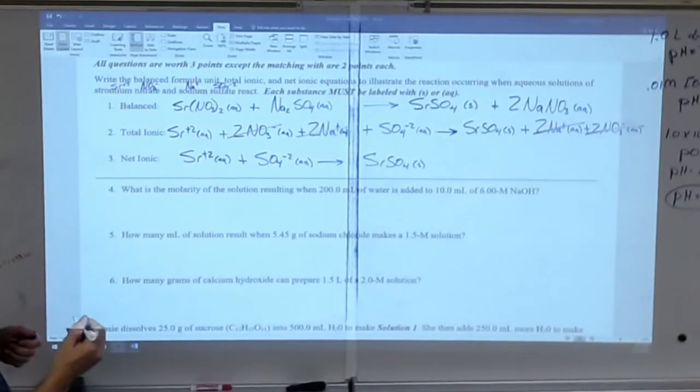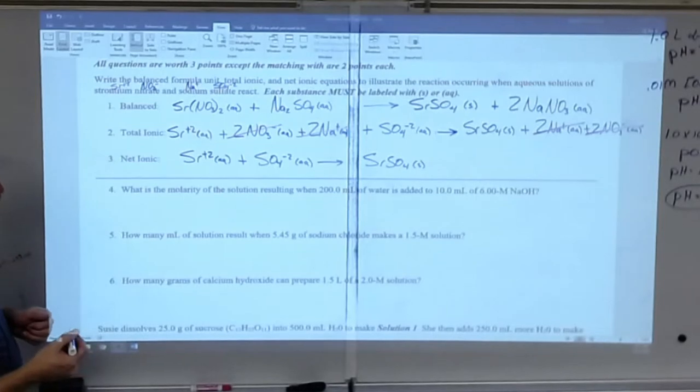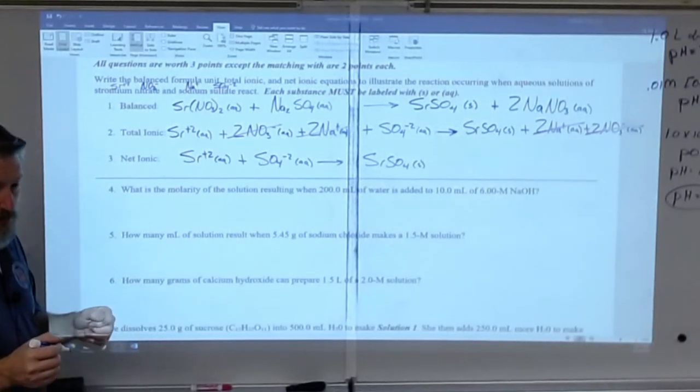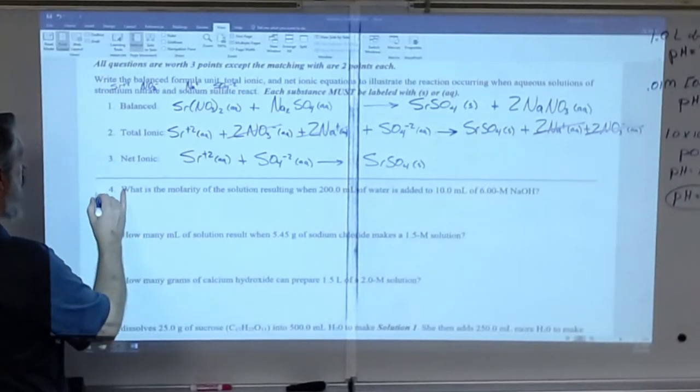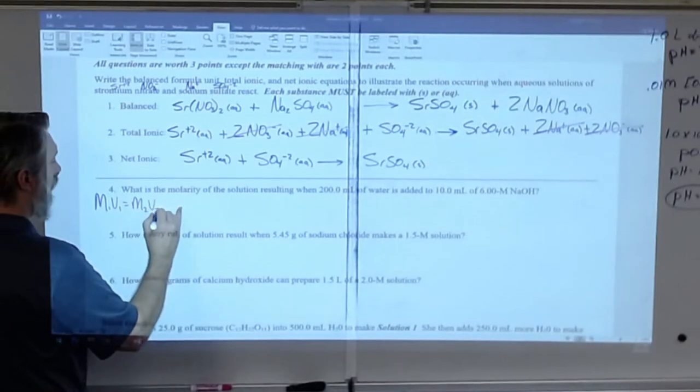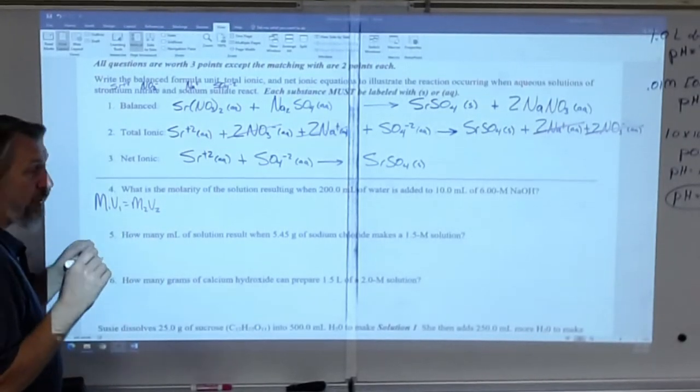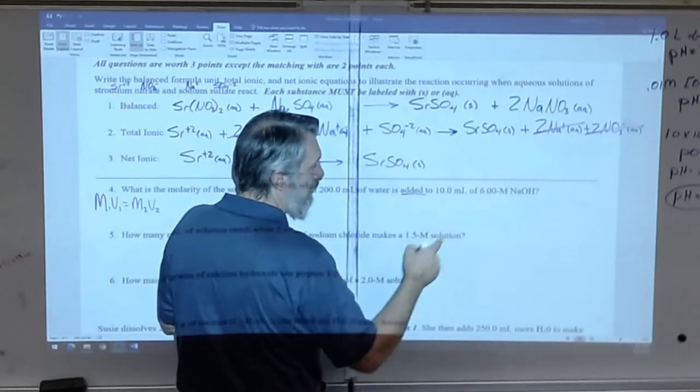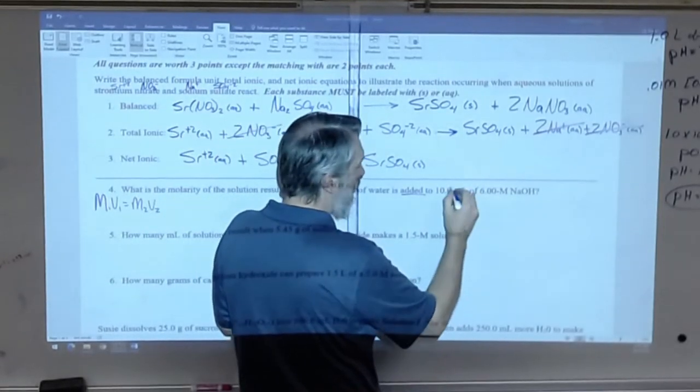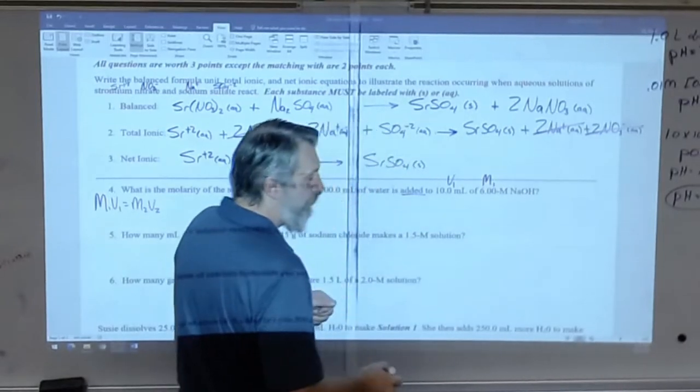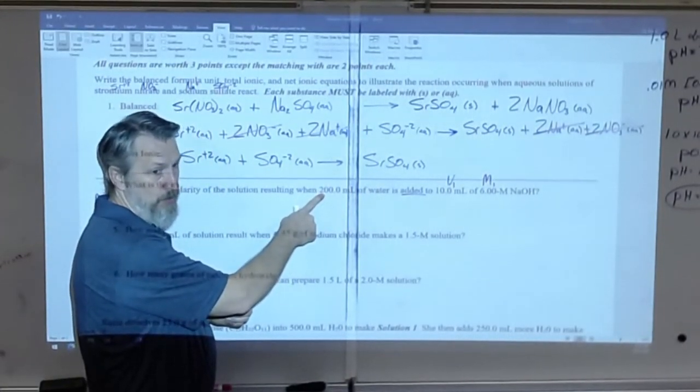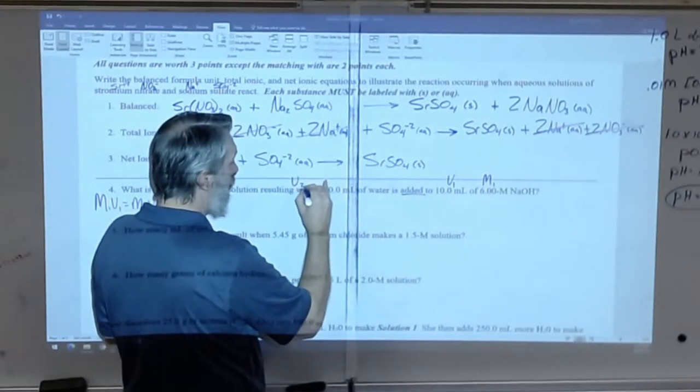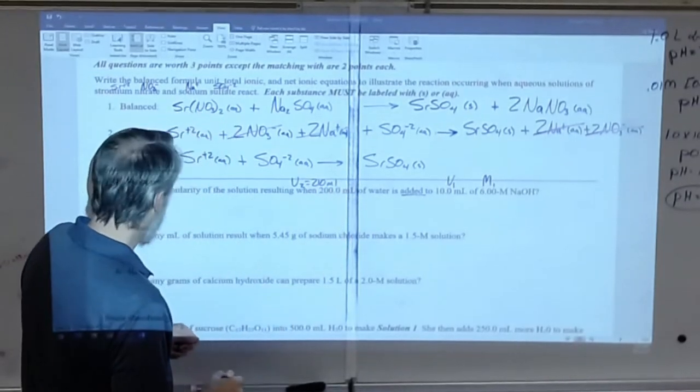What's the molarity of a solution resulting when 200 milliliters of water is added to 10 milliliters of six molar sodium hydroxide? All right. I need you to be really careful here because it is true this is a dilution problem. This is M1V1 equals M2V2. But watch your language here. This says 200 milliliters of water is added to 10 milliliters of the six molar solution. So this is definitely V1 and this is definitely M1. This is not V2. V2 is 200 plus 10. So V2 equals 210 milliliters.